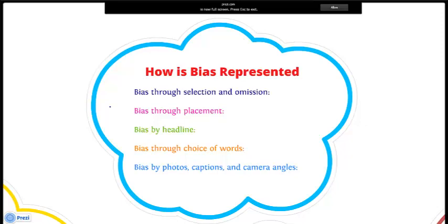Bias through choice of words is also important. In many places in the world, one person's terrorist is another man's freedom fighter. Words have emotional connotations as well as literal meanings. By using emotionally charged words, writers can influence the feelings of an audience.